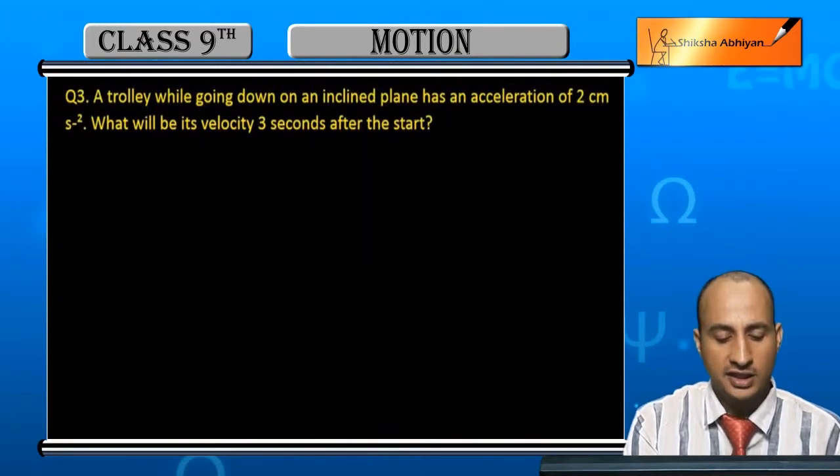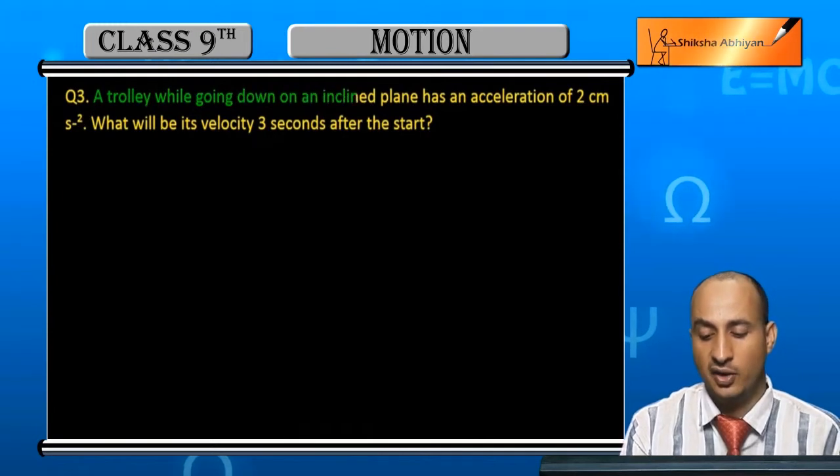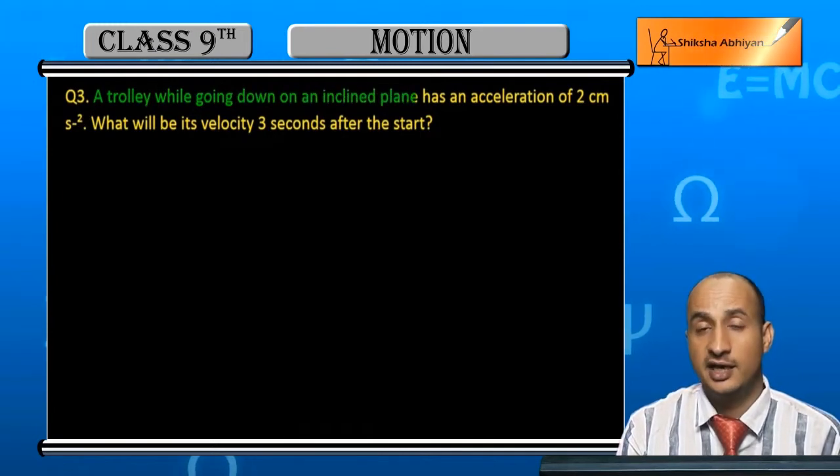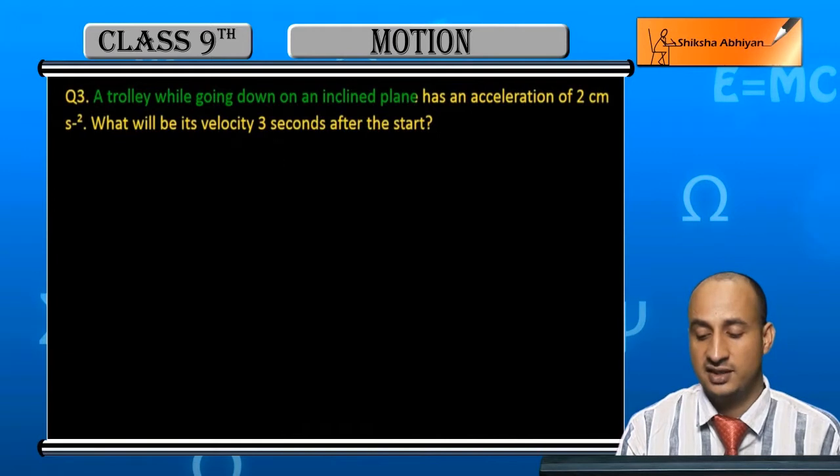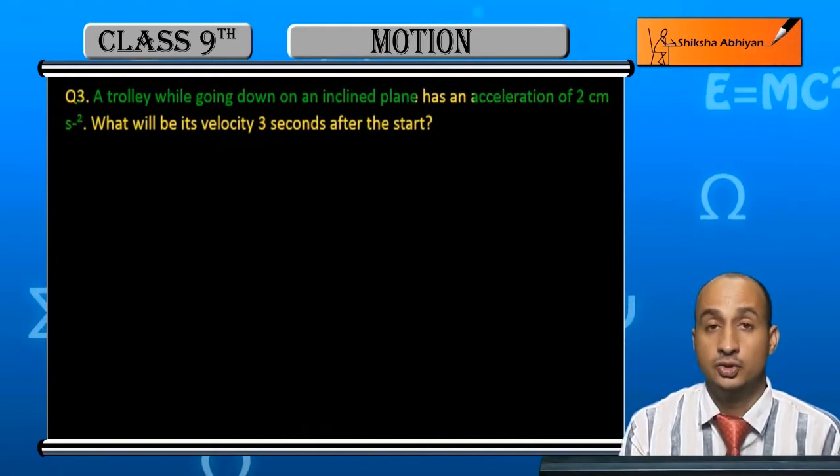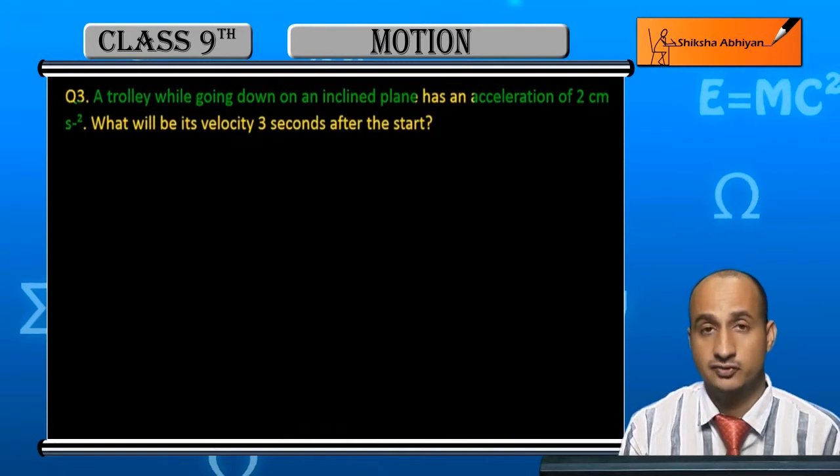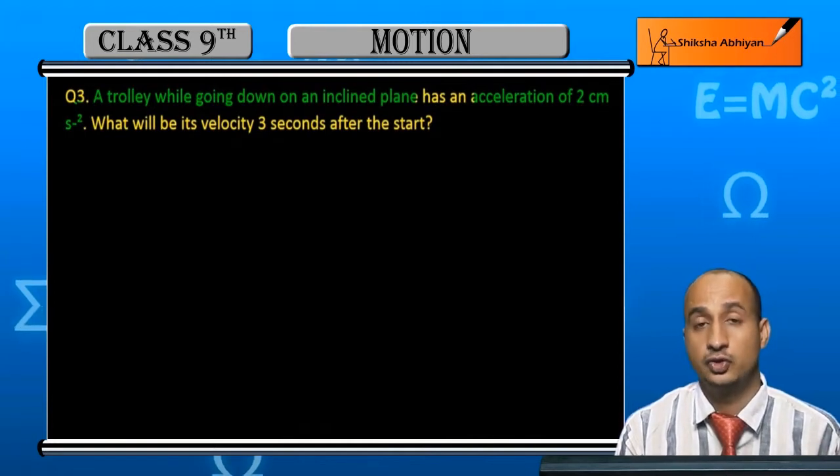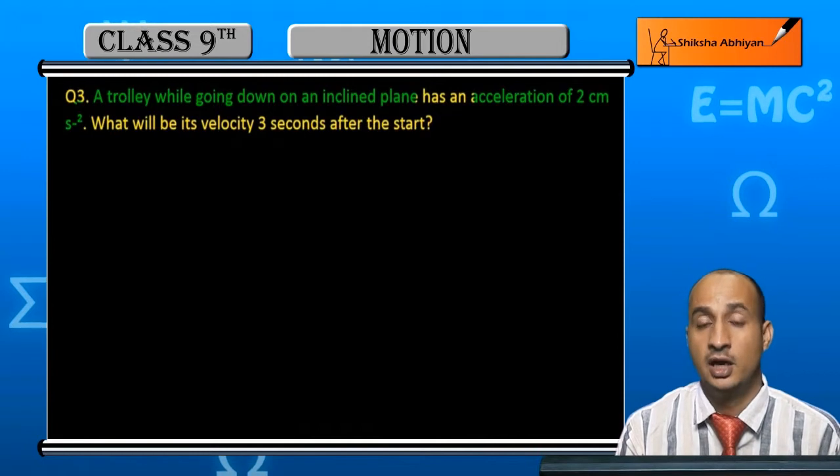A trolley while going down on an inclined plane. In an inclined plane, the trolley goes to the bottom. It has an acceleration of 2 cm per second square. When the trolley goes to the bottom, the acceleration is 2 cm per second square.